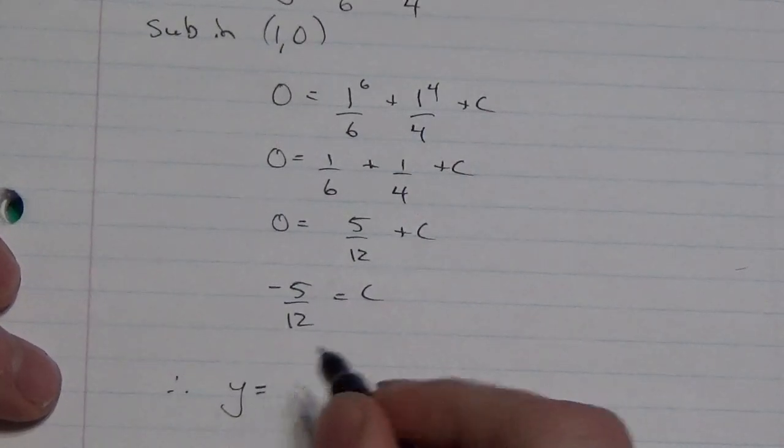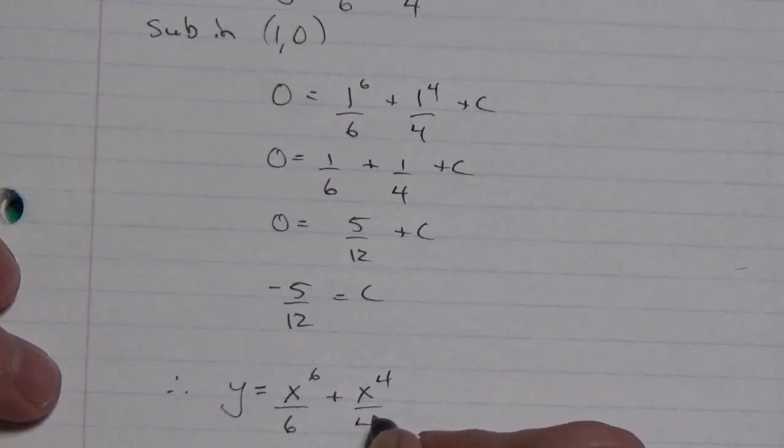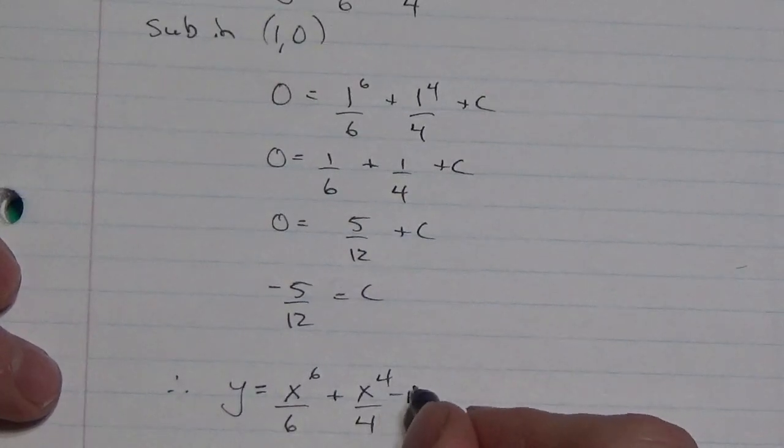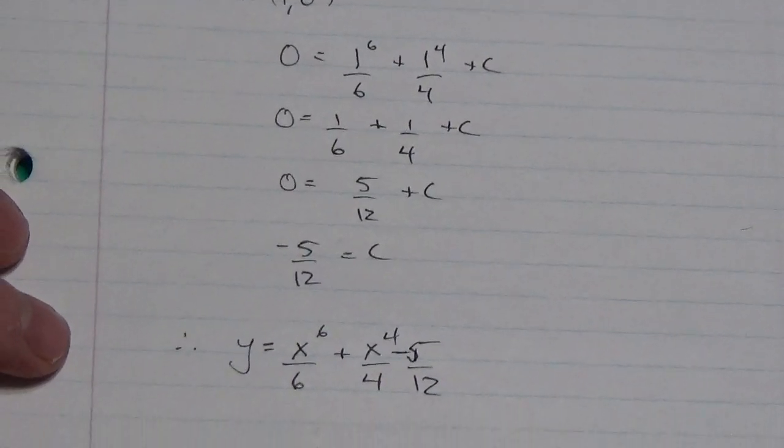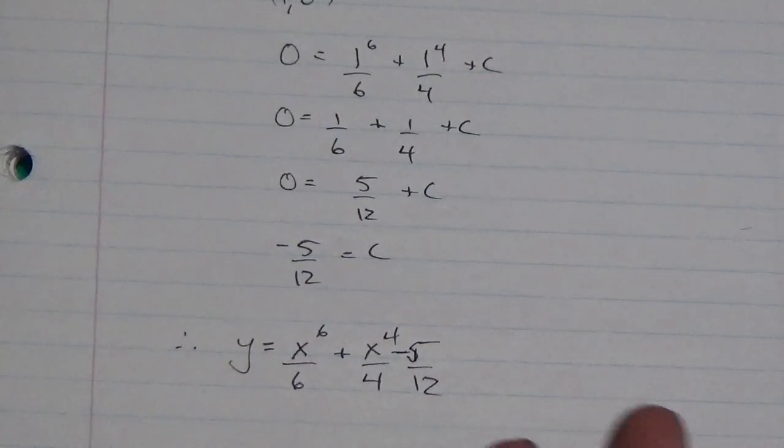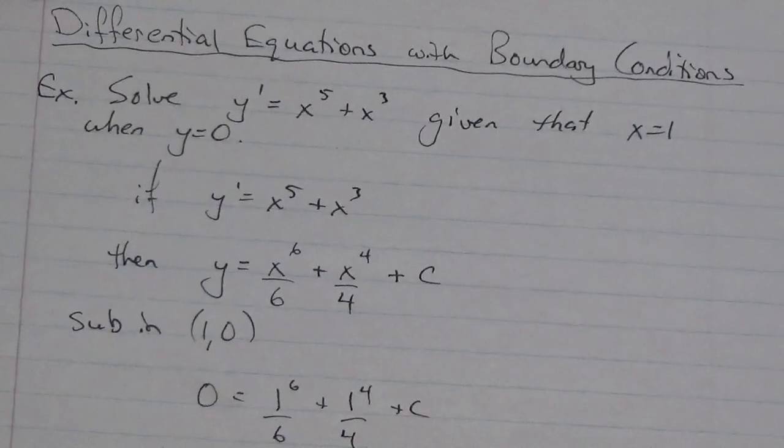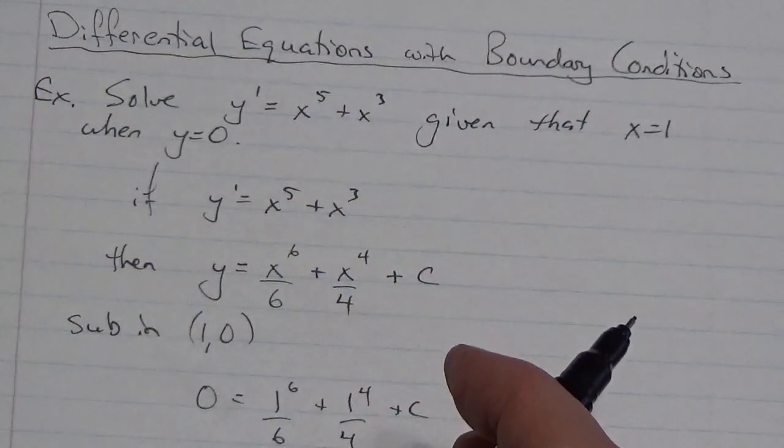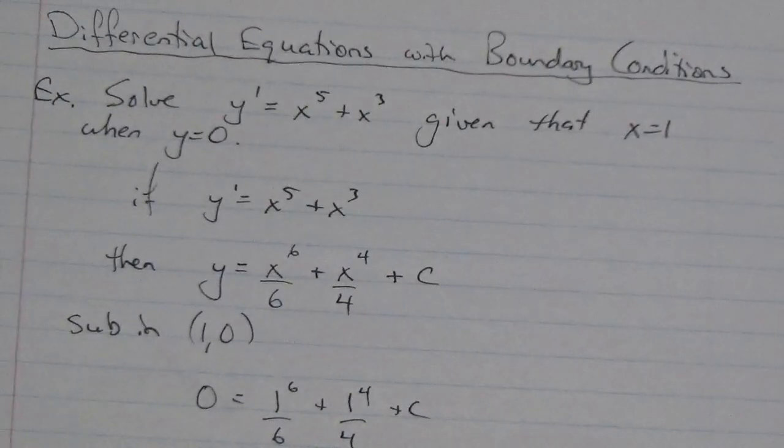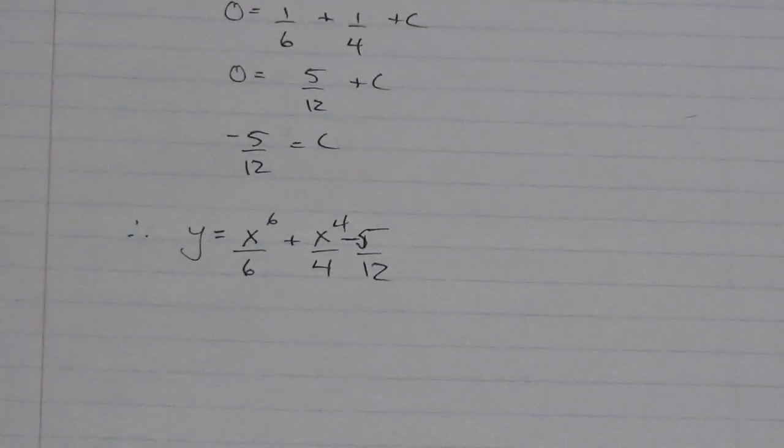Because of that additional bit of information, this constant that we were looking at isn't actually as arbitrary as it was at first. Therefore, the solution to my equation is going to be y = x^6/6 + x^4/4 - 5/12. That's the solution to this particular equation. We call this bit of information, where it goes to the point x = 1 and y = 0, we call that the boundary condition. We're going to use that extra little bit of information to help us get that arbitrary constant. Let's look at another example.